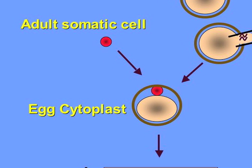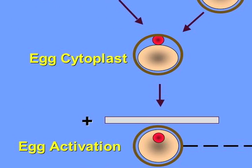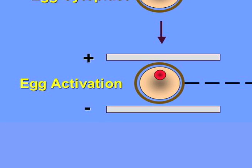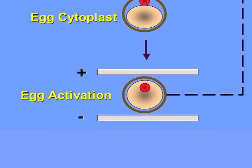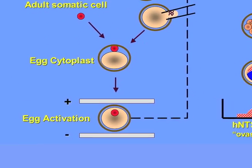Commonly a skin cell. Those genes then are incorporated into the egg. The egg is able to remodel those genes so that they now can support development of early cleavage stages to the blastocyst stage.